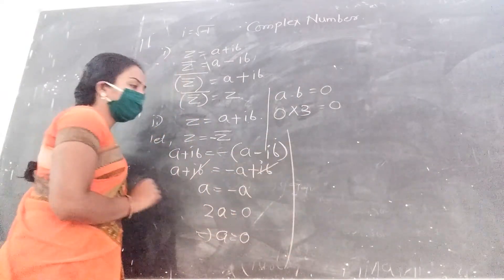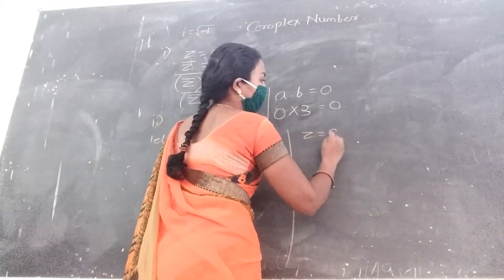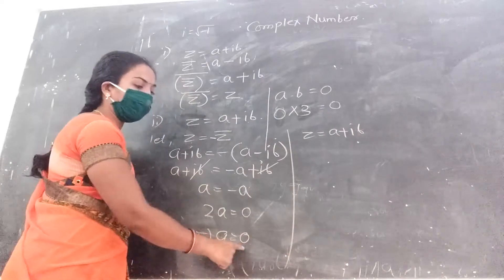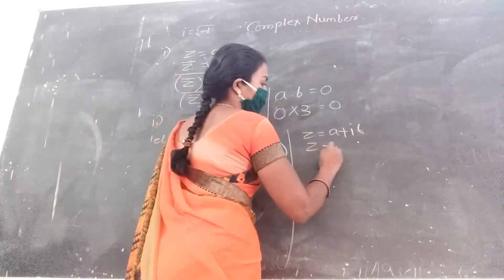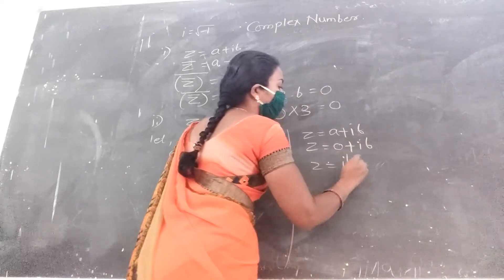Now put again, z equal to minus z bar means if z equals a plus ib, but a we got as zero. Zero plus i into b, means z equals only i into b.